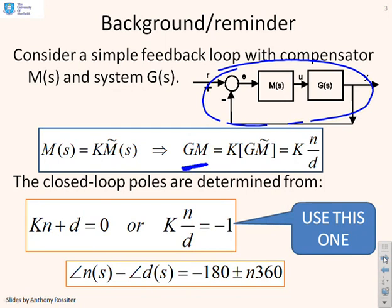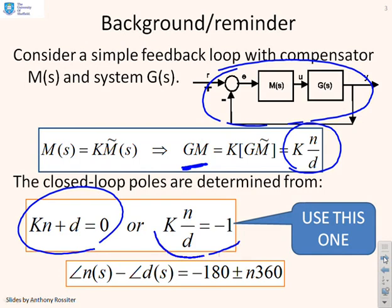We're going to write GM as KN over D, where K is the key gain that we want to select. We've recognized that the closed-loop poles can be given from an expression like this, and it's the expression on the right that we're going to focus on for this video on compensator design.